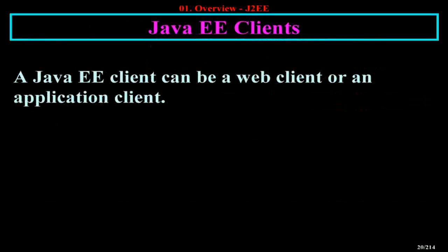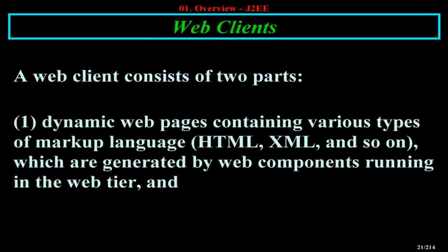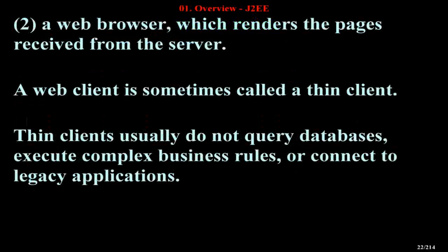A Java EE client can be a web client or an application client. A web client consists of two parts: dynamic web pages containing various types of markup language such as HTML and XML, which are generated by web components running in the web tier; and a web browser, which renders the pages received from the server.